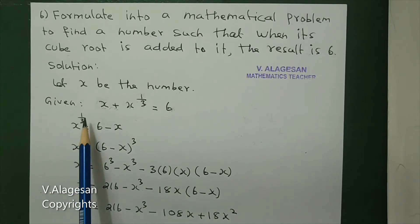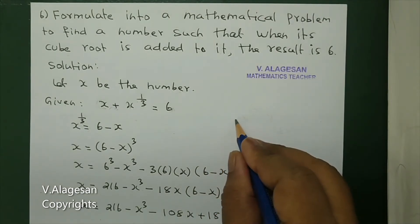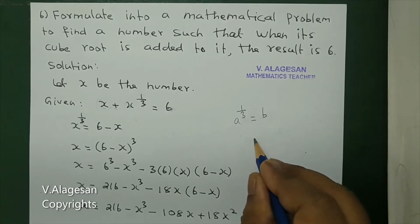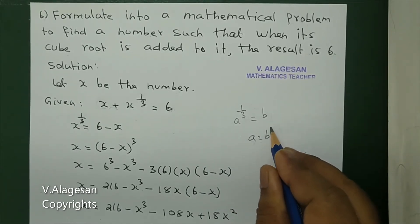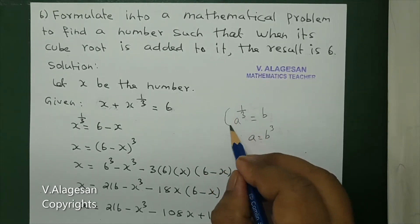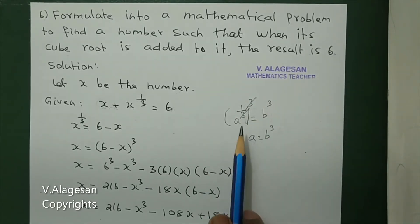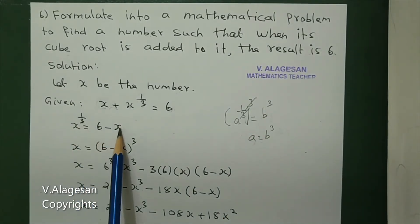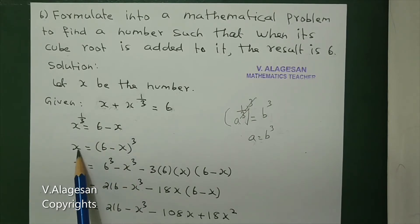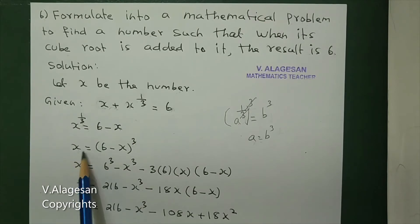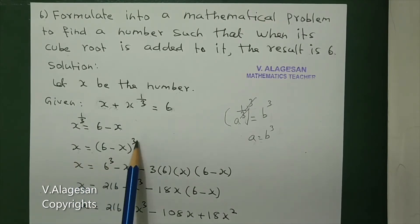Now cubing both sides: since x to the power one-third is equal to six minus x, we raise both sides to the power three, giving x is equal to six minus x, whole cube.